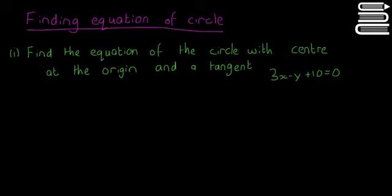The first one we're going to look at is asking us to find the equation of a circle with the center at the origin and a tangent 3x minus y plus 10 equals 0.